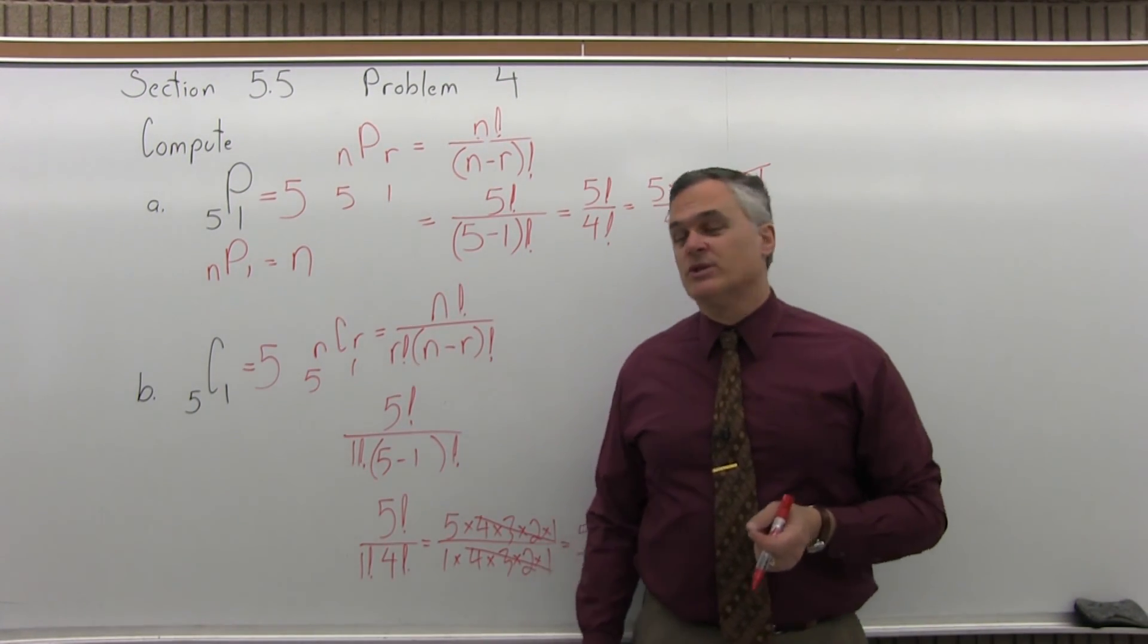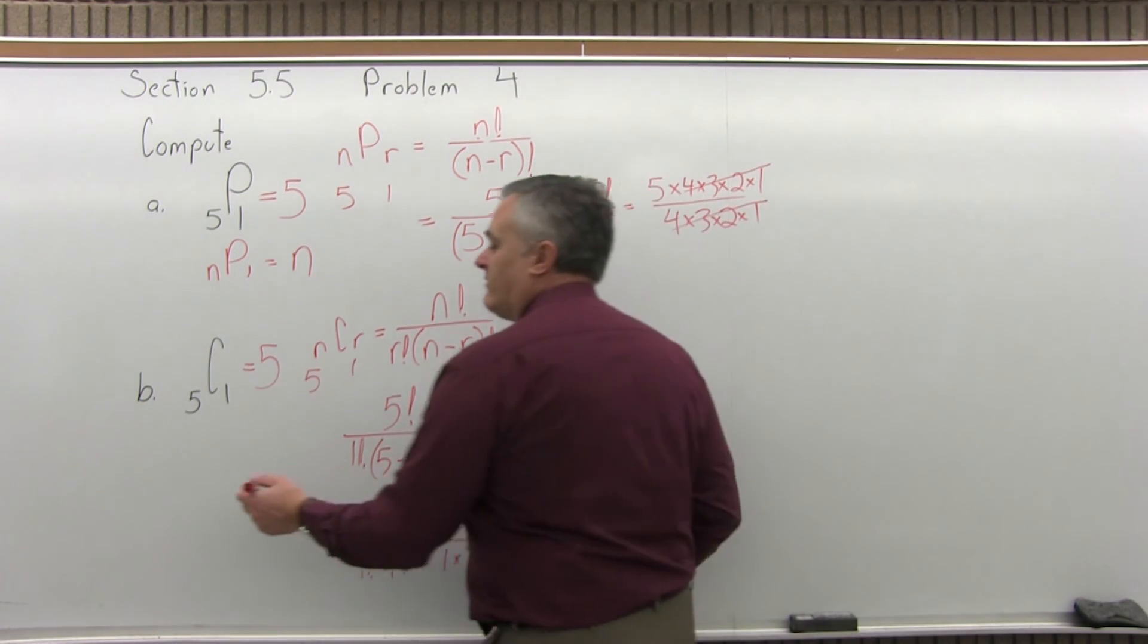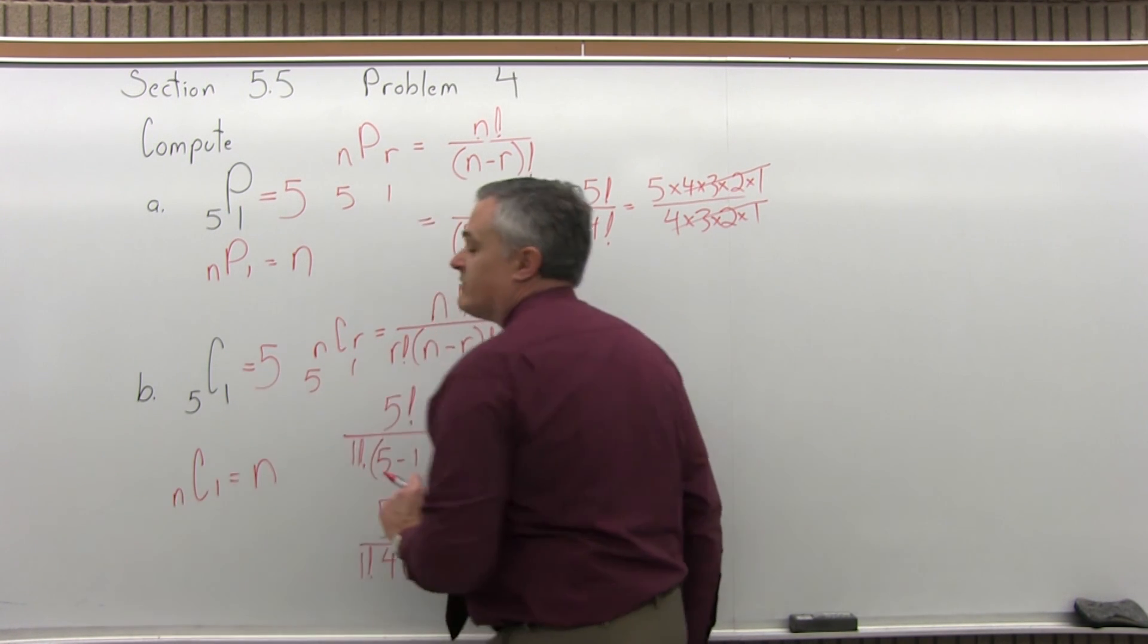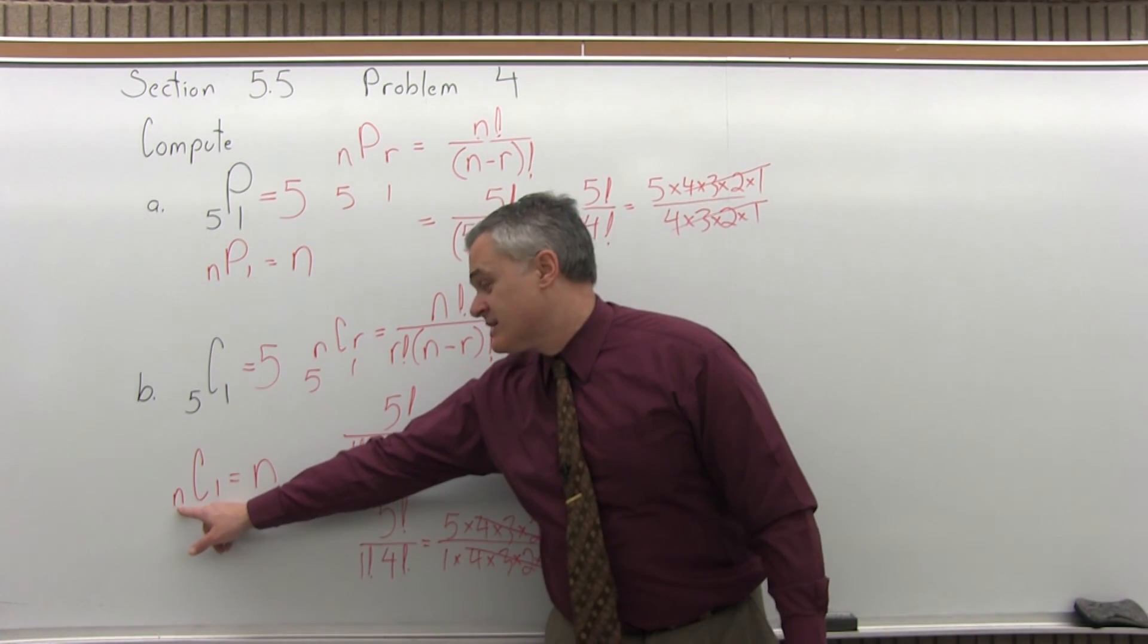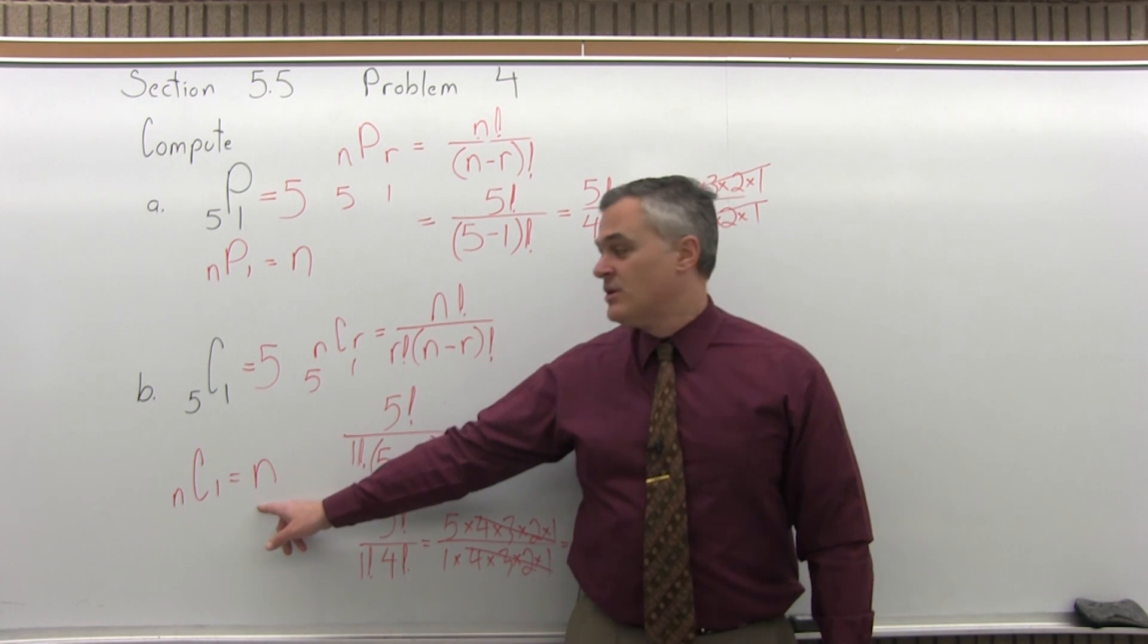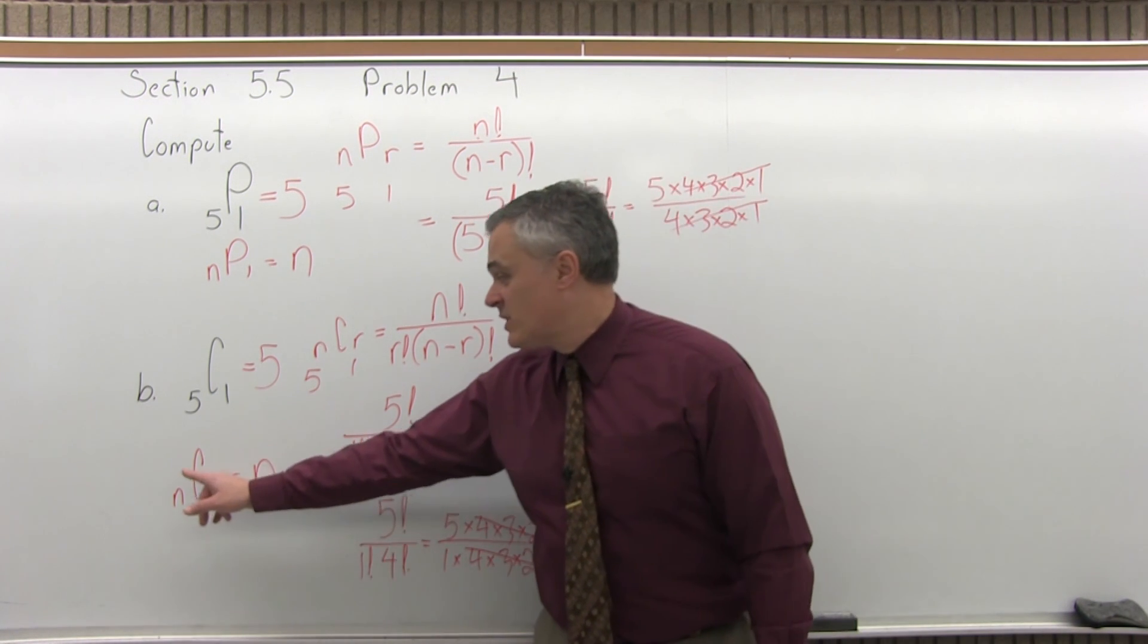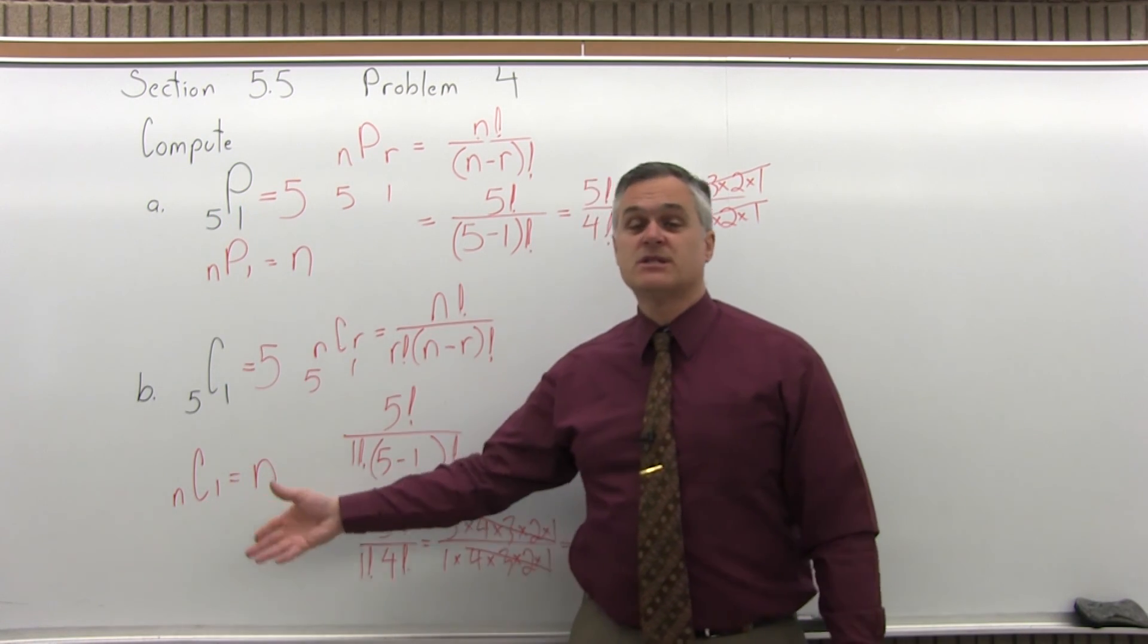Again, you get that same shortcut that once you do it once or twice, you can apply it whenever you really need to. Whenever the second number is 1, for permutation or combination, the answer is whatever the first number is. So, 63, let's say, combination 1 would be 63. Or, 44, combination 1 would be 44. When the second number is 1, the answer is whatever the first number is. For both permutation and combination, it's a nice shortcut.